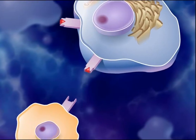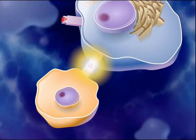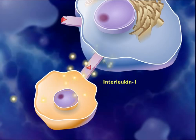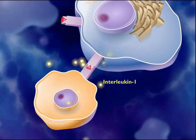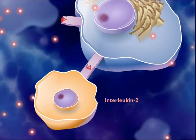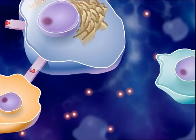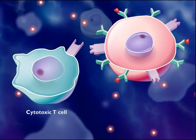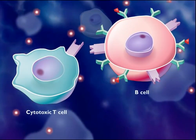An antigen-presenting macrophage interacts with a T-helper cell that can recognize the same antigen. During the interaction, the macrophage releases a chemical alarm signal called interleukin-1, which stimulates the T-helper cell to secrete interleukin-2. Interleukin-2 causes the proliferation of certain cytotoxic T-cells and B-cells.